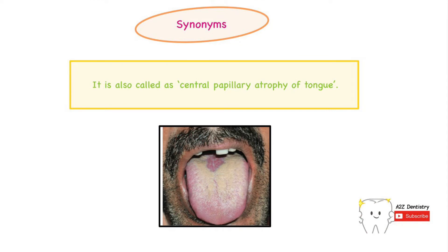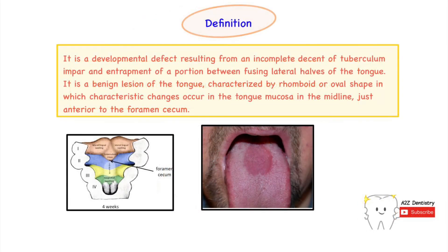Median rhomboid glossitis is also known as central papillary atrophy of the tongue. As seen in the picture, in the central area just anterior to the circumvallate papillae, there is a lesion which appears rhomboid in shape. This region is characterized by lack of papillae, therefore it is known as central papillary atrophy of the tongue.